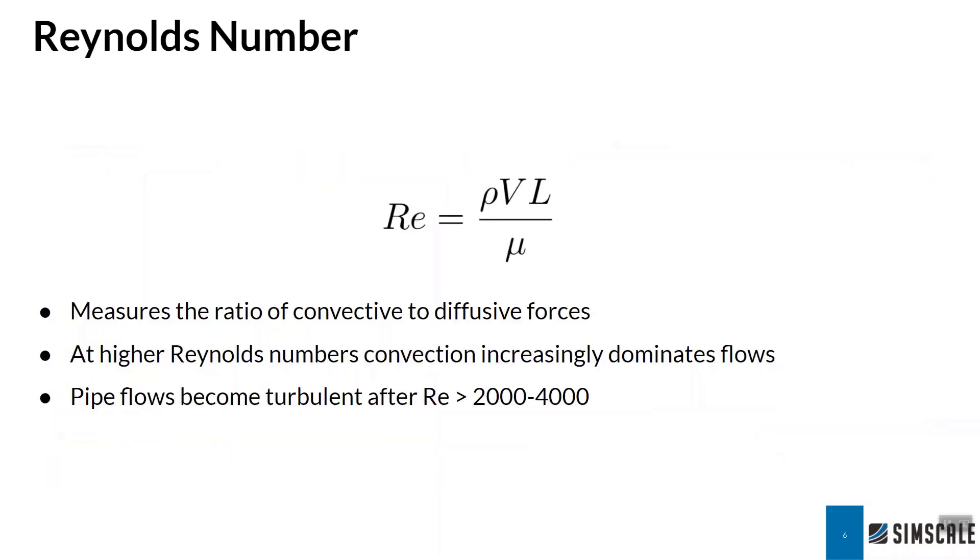In order to measure turbulence, we typically rely on the Reynolds number. The Reynolds number is the ratio of convective to diffusive forces. It's defined as Re equals ρVL divided by μ. As we approach higher Reynolds numbers, for example in a pipe, typically within the range of 2000 to 4000, we transition from the laminar flow regime into the turbulent flow regime.